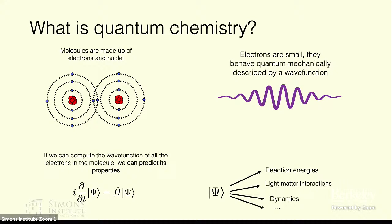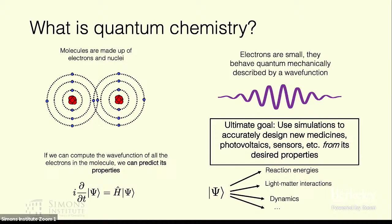Things like reaction energies, light-matter interactions, the dynamics of molecules and materials, anything that we'd want to develop new materials or molecules. So the ultimate goal is of course to use simulations to accurately design new medicines, photovoltaics, new sensors from the desired properties on the outset.